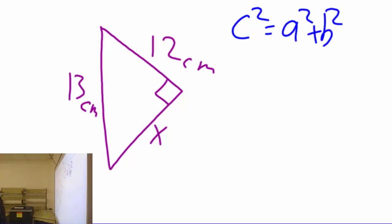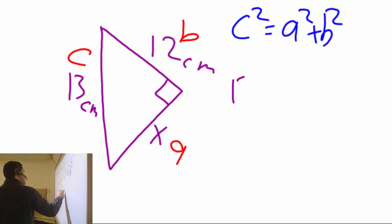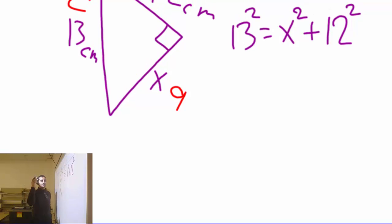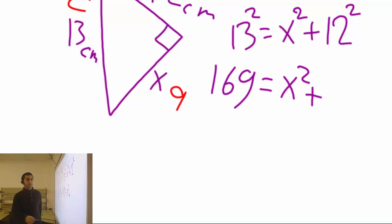And now let's replace it. You guys know this. This is C. This time I'm going to make this one A, this one B. Do it the other way around, it will never make you get a mistake. So C is 13 squared, A is X squared, B is 12 squared. Somebody calculate 13 squared please. 169.